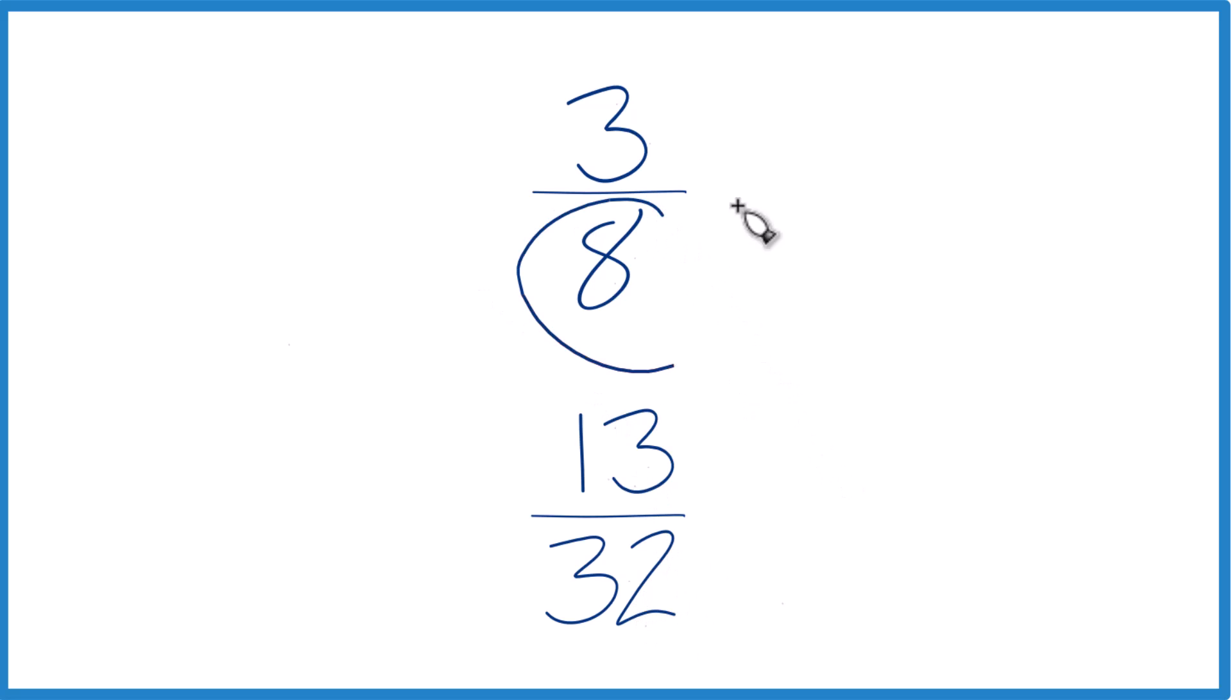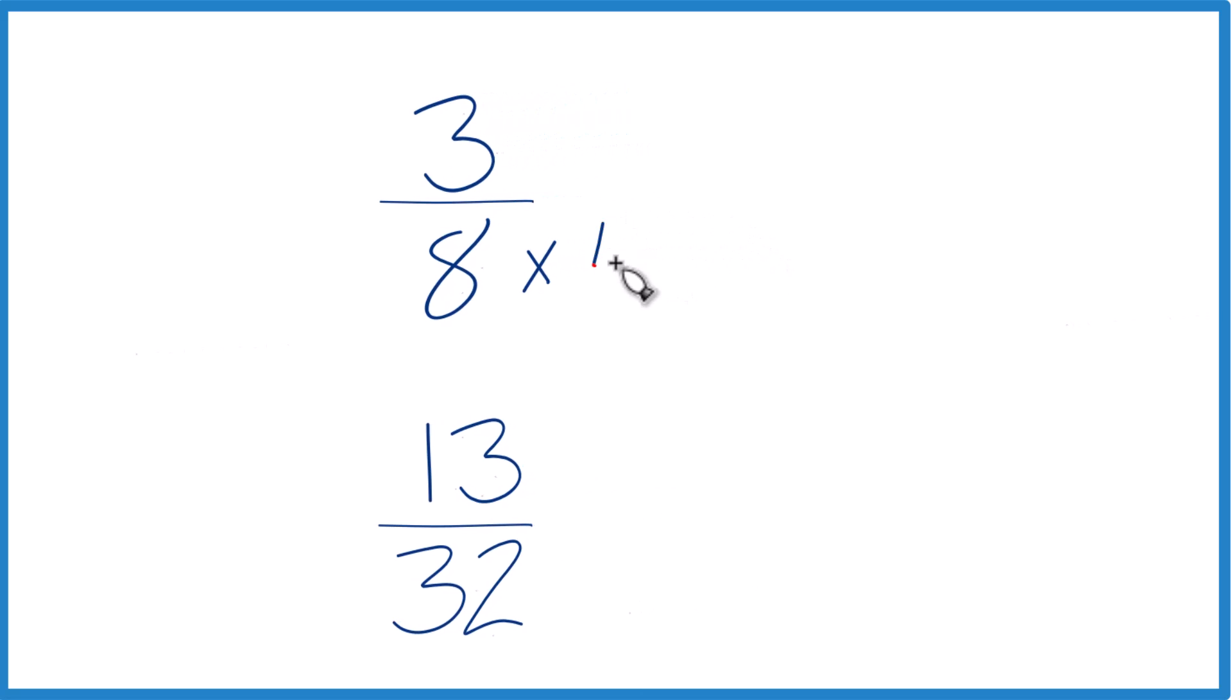The other way is if we could get a common denominator, then we could just compare the numerators and figure out which is larger. I know that 8 goes into 32 four times. So I'm going to multiply 8 times 4 and that'll give me 32.